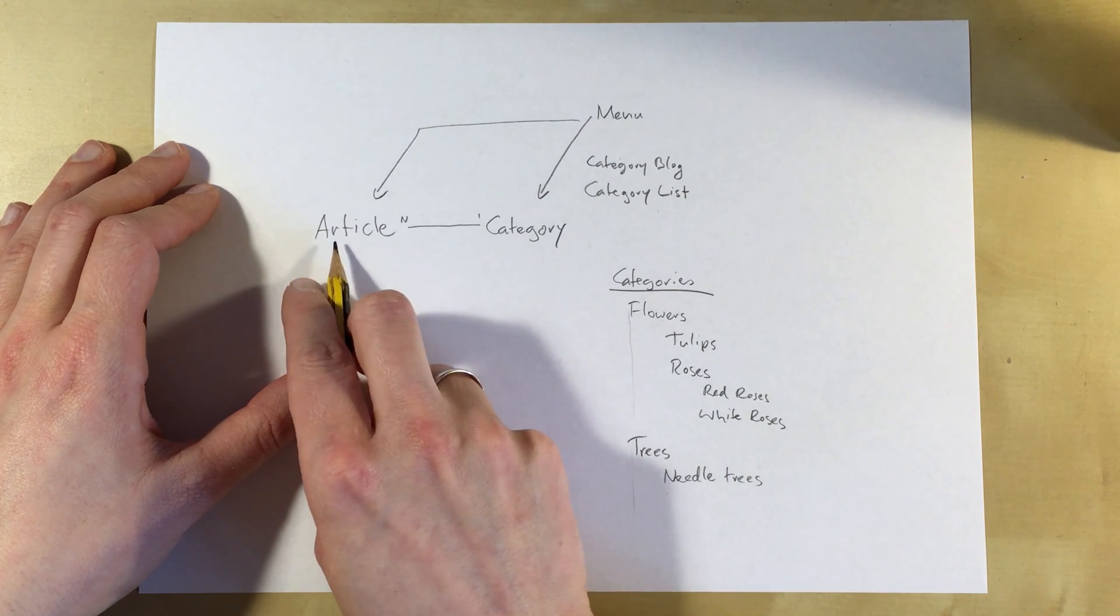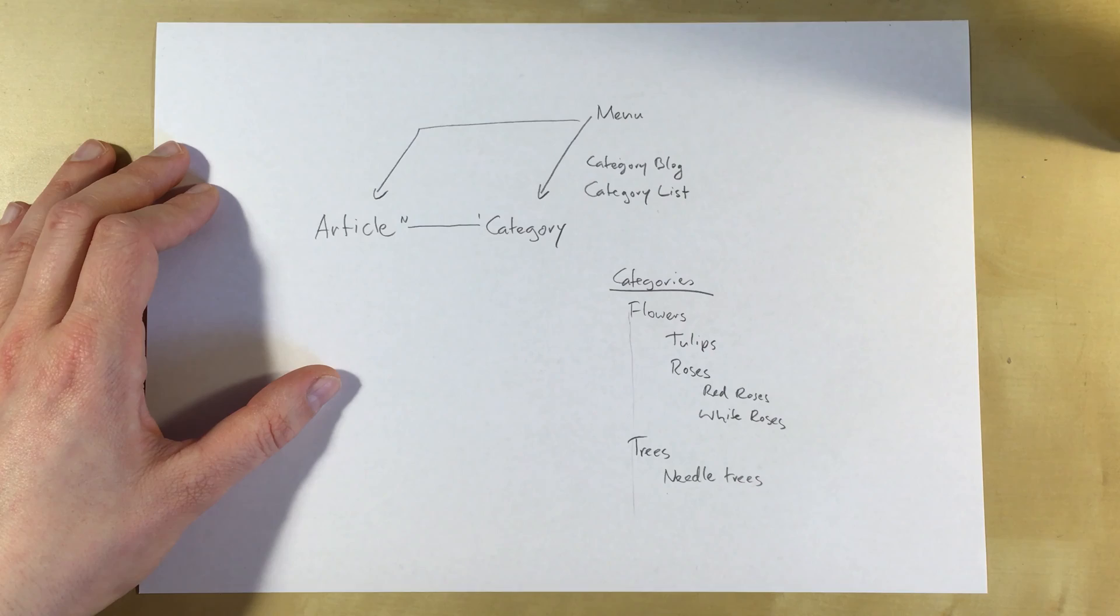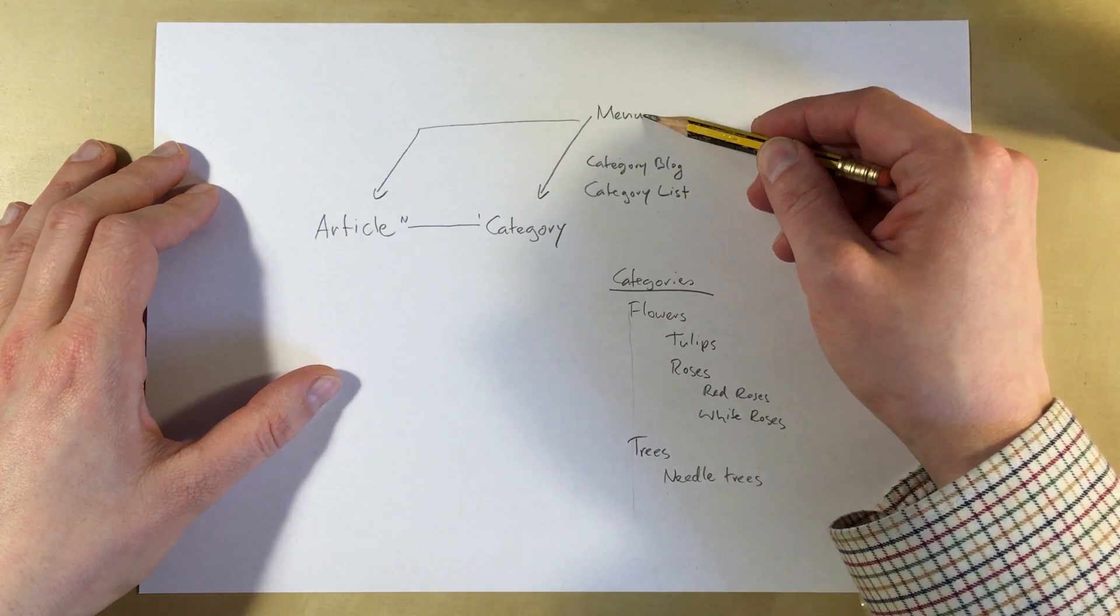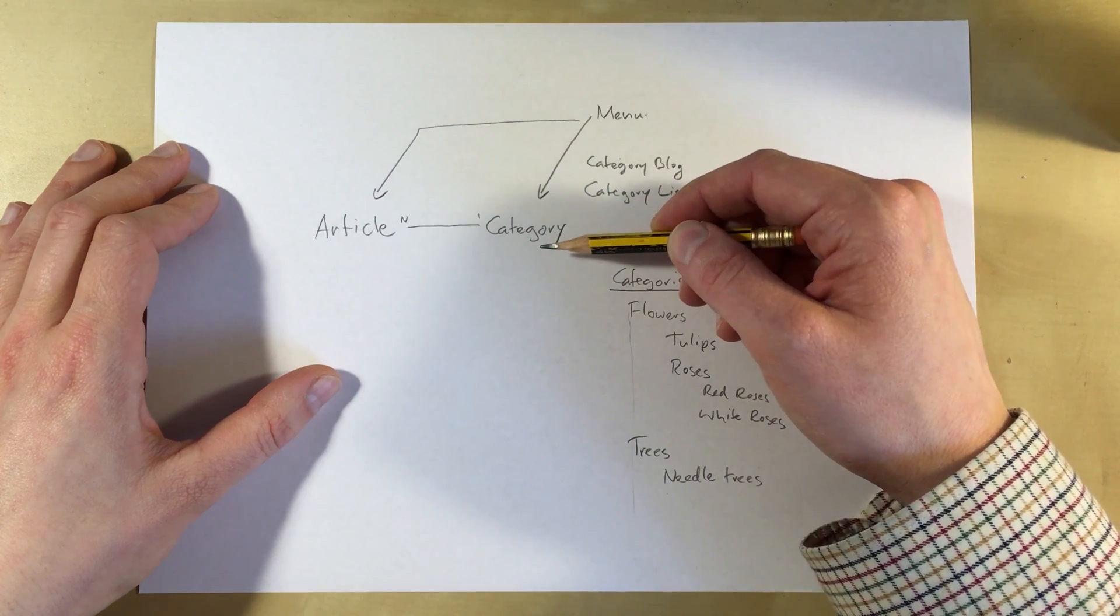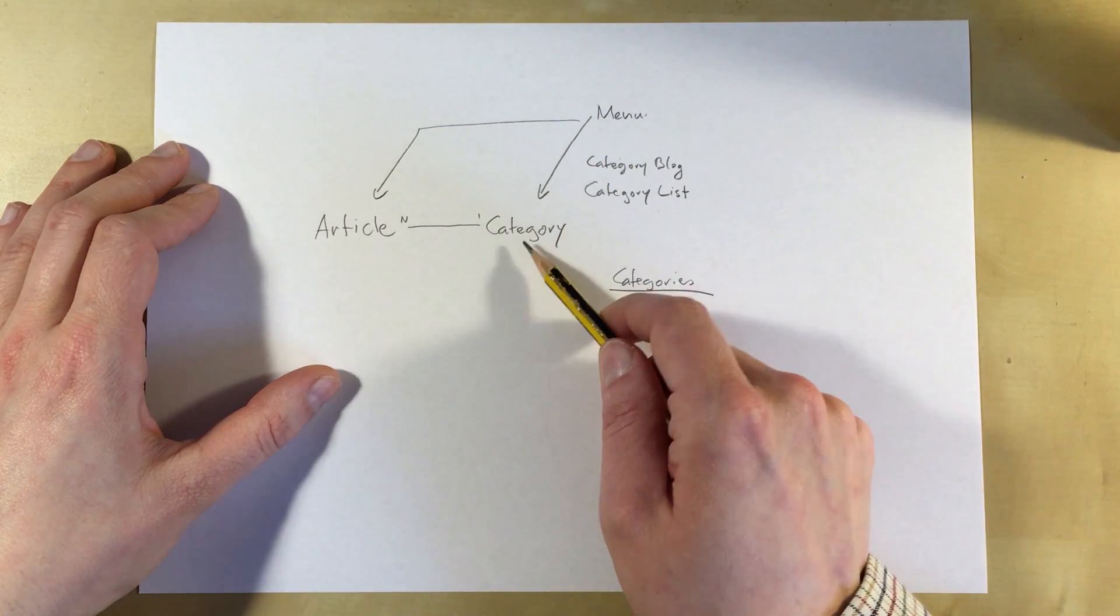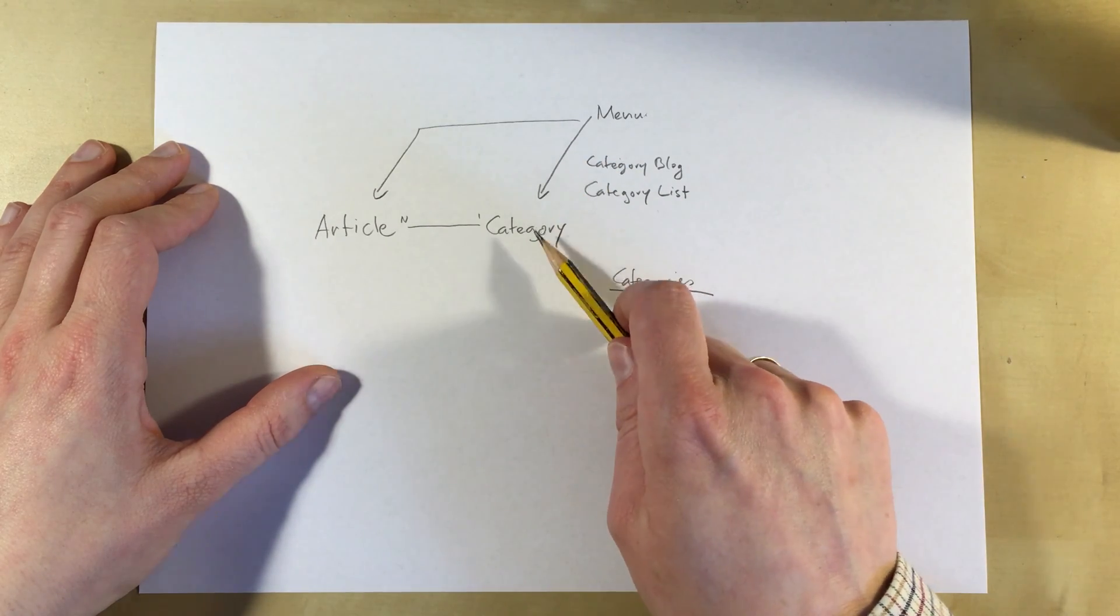So grouping articles in categories makes it easy to find your articles, and it also helps to create menu items that link directly to those categories that you are using.